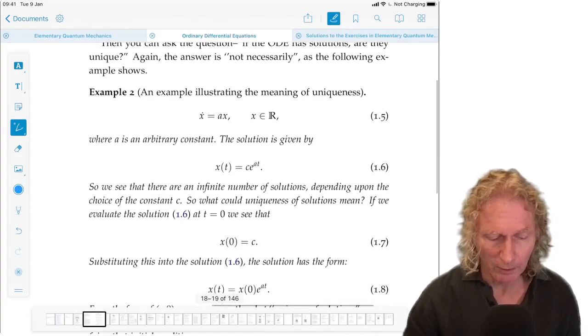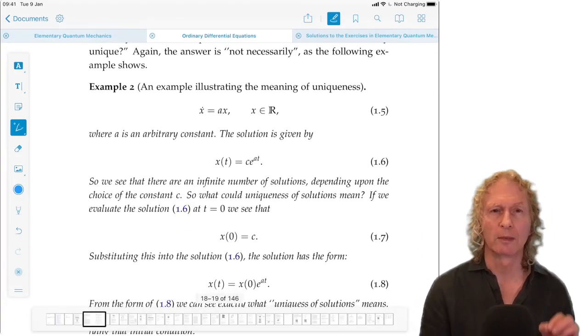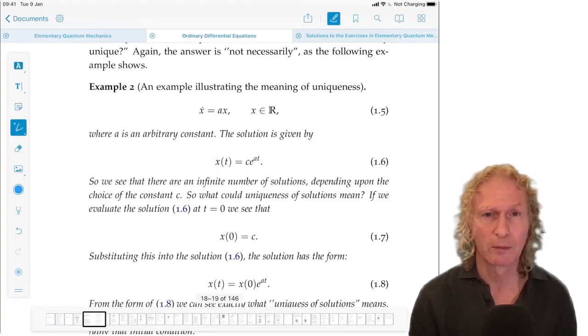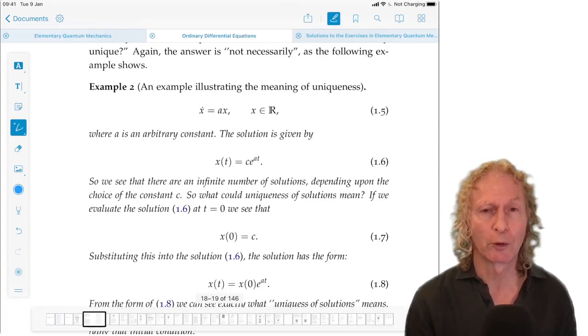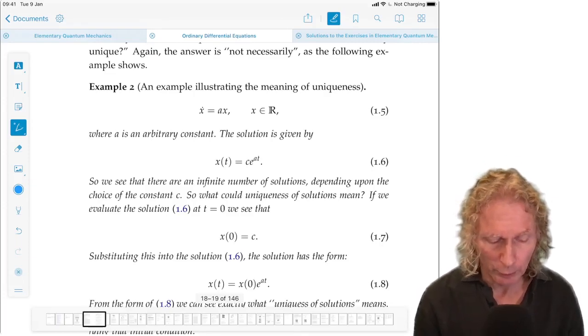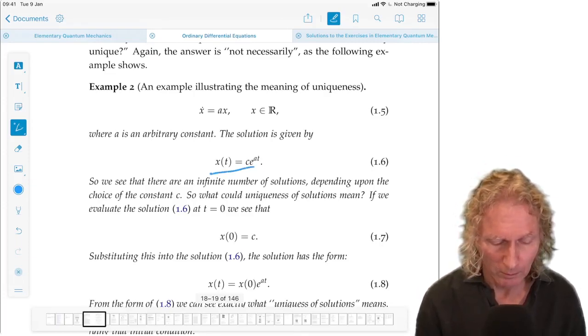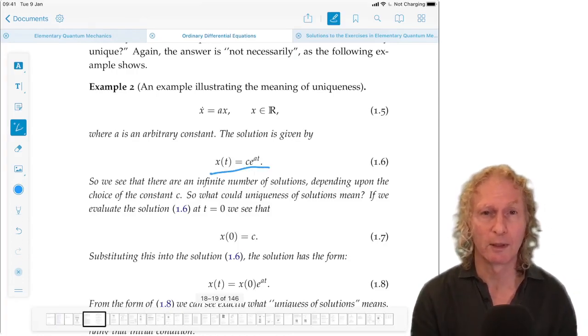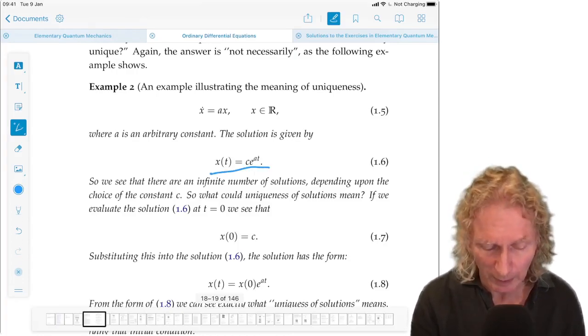But let's consider a more realistic example. x dot equals Ax. So a first-order system on the real line. A is a constant, a real number. The solution of this equation is given by x(t) is another constant times e to the At.